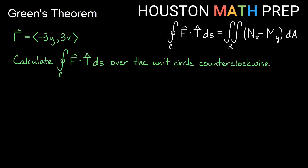Let's look at our first example. We have a vector field that is ⟨−3y, 3x⟩. We want to calculate the circulation over the closed curve that is the unit circle, counterclockwise. We will convert our line integral using Green's Theorem because this is a closed curve. We're going to treat it as a double integral over the region of the unit circle, integrating partial N_x minus partial M_y dA.